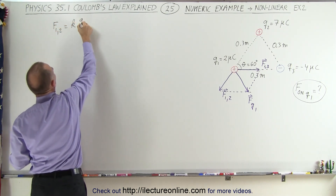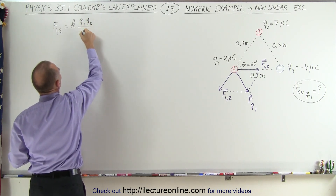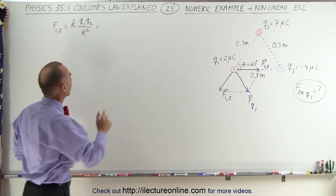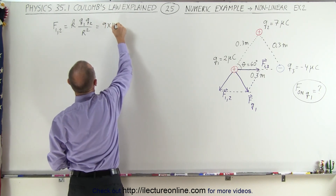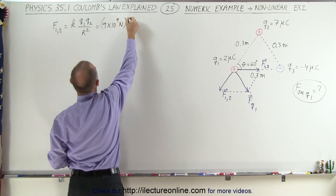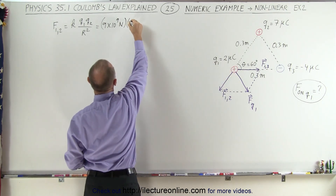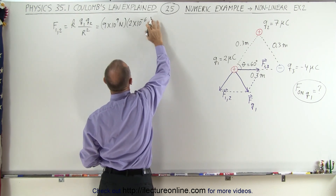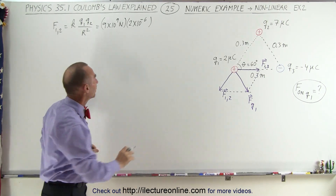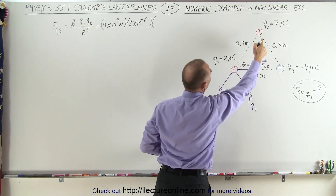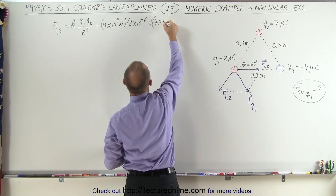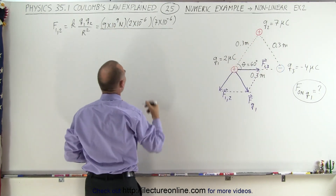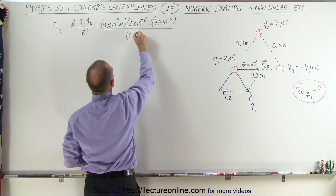That's equal to K times Q1 times Q2 divided by the distance squared. If it's positive or negative charges, we don't really care because we only want to find the magnitude of the force. So that's equal to 9 times 10 to the 9 Newtons, times Q1 which is 2 microcoulombs — that's 2 times 10 to the minus 6 — times Q2 which is 7 microcoulombs, so 7 times 10 to the minus 6, all divided by the distance between them. Notice it's an equilateral triangle; the distance is 0.3 meters, so it's 0.3 quantity squared.